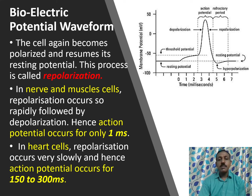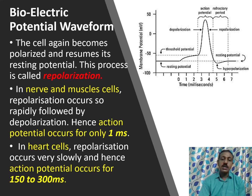This process is called repolarization. In nerve and muscle cells, the repolarization will occur very rapidly immediately after the depolarization. Hence, the action potential occurs only for 1 millisecond. But in heart cells, the repolarization occurs very slowly and hence the action potential will occur for 150 to 300 milliseconds.